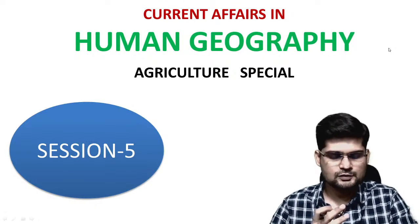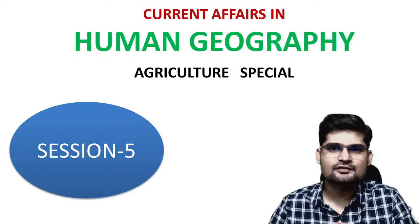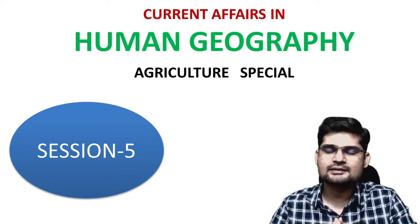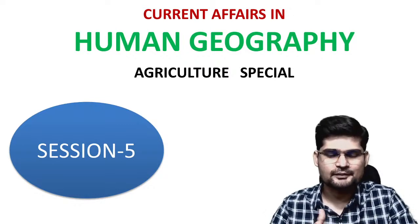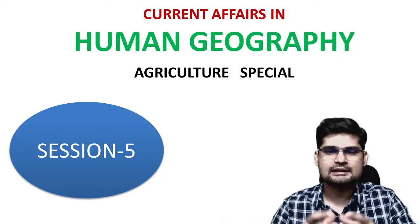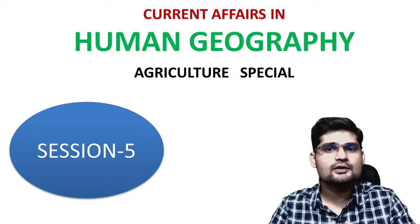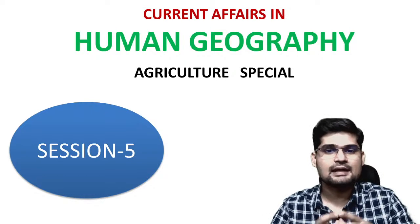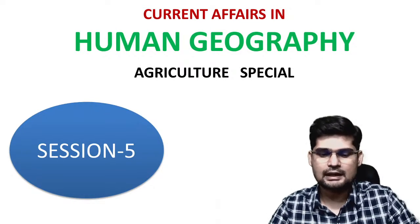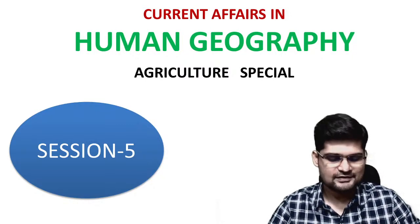Let's begin the live session today. This is the fifth in the series of current affairs and geography. In the last four sessions we covered topics related to physical geography, so from now onwards we are moving into human geography. Today, being session five, we are doing agriculture — discussing questions and concepts related to agriculture in current affairs and geography.